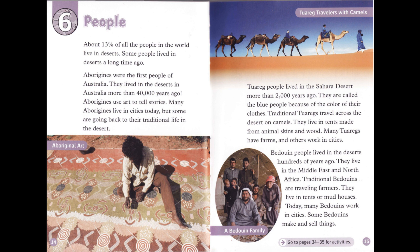Tuareg people lived in the Sahara Desert more than 2,000 years ago. They are called the Blue People because of the color of their clothes. Traditional Tuaregs travel across the desert on camels and live in tents made from animal skins and wood. Many Tuaregs have farms, and others work in cities. Bedouin people lived in the deserts hundreds of years ago in the Middle East and North Africa. Traditional Bedouins are traveling farmers who live in tents or mud houses. Today, many Bedouins work in cities, and some make and sell things.